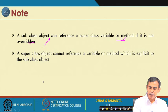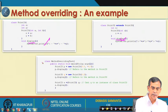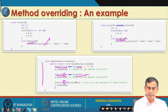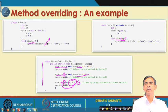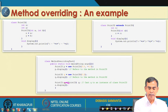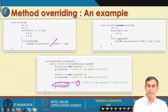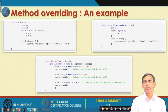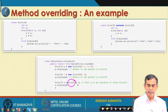Continuing the previous example, the display method declared in Point3D overrides the display in Point2D. In the program, Point2D P and Point3D Q are created. X is another object created by upcasting Q — though Q is a Point3D, it can be cast to Point2D. When X.display() is called, it calls the display method through this upcasting, which is called dynamic binding.